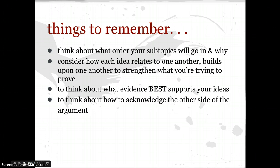So things to remember. When you think about ordering your subtopics, you need to think about where it will go and why. Consider how each idea relates to and builds upon one another to strengthen what you're trying to prove. We have our thesis, and we have to make sure that what we're writing actually supports it. In addition, what evidence best supports our ideas? We have lots and lots of notes — but what pieces of information, what revealing citations are the best? What paraphrases can we use? Because we don't want to put in too much, but we also don't want just one quotation that doesn't do a very good job. Finally, think about how to acknowledge the other side of the argument.